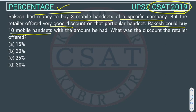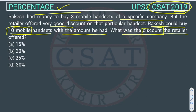So what happened? When the shopkeeper gave him a discount, Rakesh was able to buy 10 mobiles with the same amount of money he had. We have to find out how much discount was offered to Rakesh by the shopkeeper.